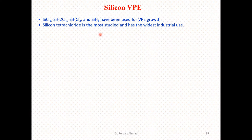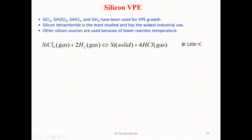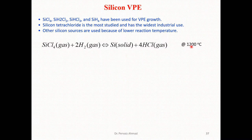The other silicon sources — those three additional compounds — can also be utilized as silicon sources, and the reason behind their use is their lower reaction temperature. The main chemical reaction for silicon VPE involves silicon tetrachloride in the gaseous phase reacting in a hydrogen environment at 1200 degrees centigrade.